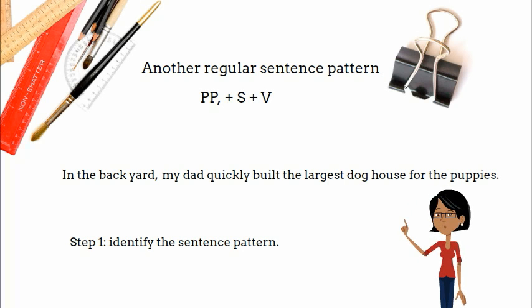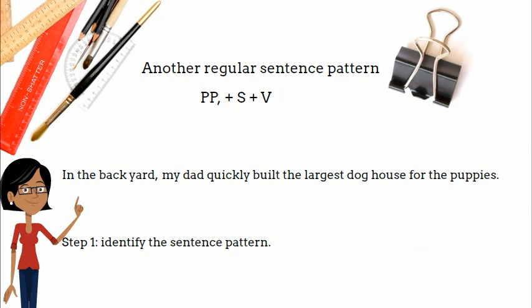In this sentence, the pattern is PP plus S plus V. The comma after the prepositional phrase lets you know that that visiting phrase belongs to the complete predicate and can be moved to the back of the sentence. You can put a dividing line through the comma to show a division.